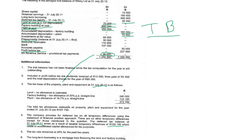You can always rewind the video to get these figures in case you miss them. The tax bases have already been calculated: 240,000 for the factory building and 133,100 for the plant — a total of 373,100. There is no capital allowance claimable on land, since land does not depreciate. Our tax rate is 28% for both the previous year and the current year.